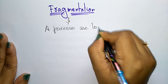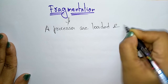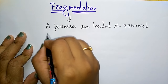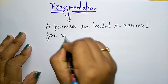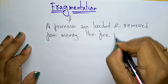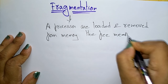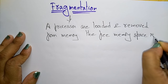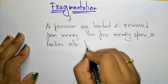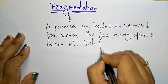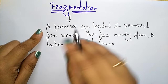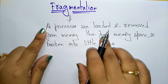A process is loaded in main memory and removed from memory. After being removed from memory, the free space present in the main memory — the free memory space — is broken into little pieces.